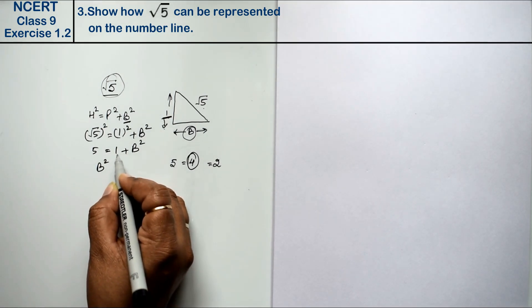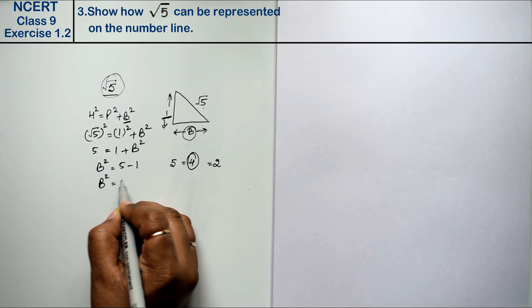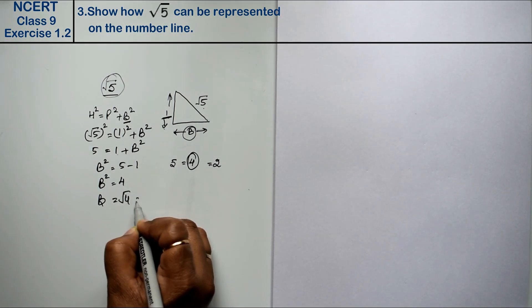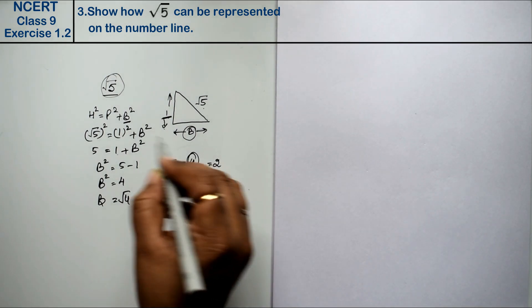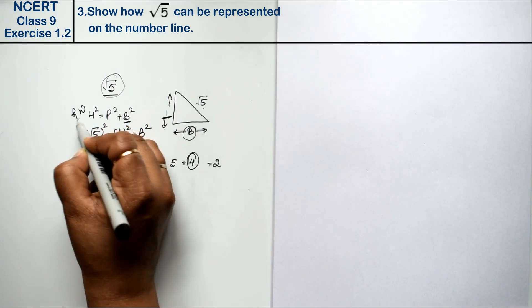What is the value of b square? This is 1 here. That means 5 minus 1, b square is 4. So what is b? Square root of 4, that is 2. In reverse order, this is rough work. This is rough work, we will not do it in fair work.